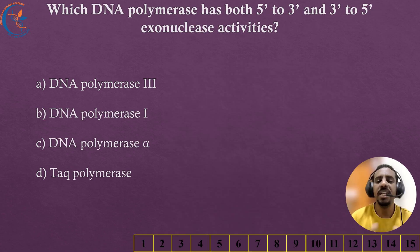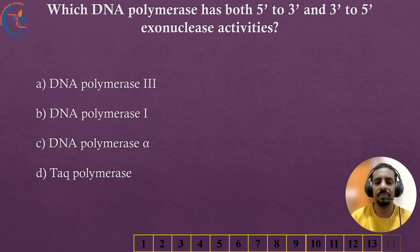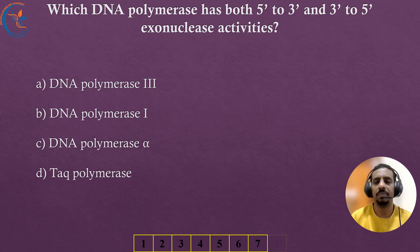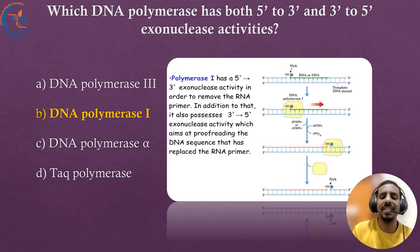Which DNA polymerase has both 5' to 3' and 3' to 5' exonuclease activities? The correct answer is DNA polymerase I.